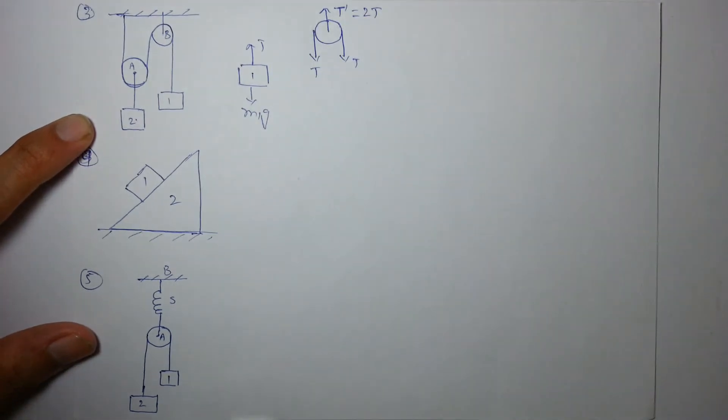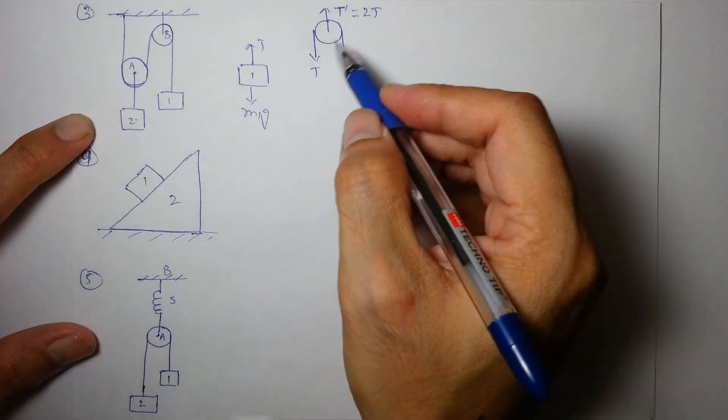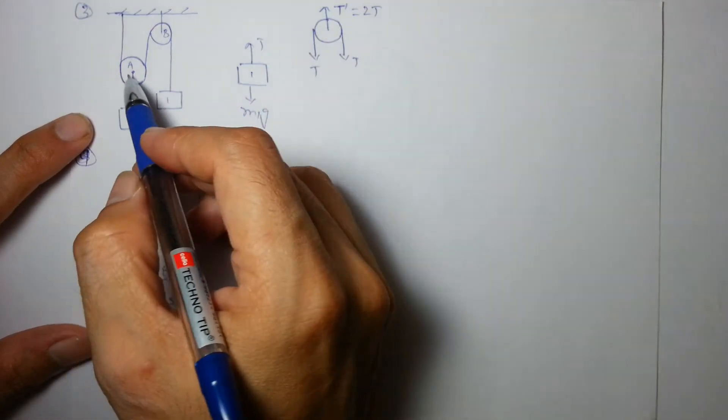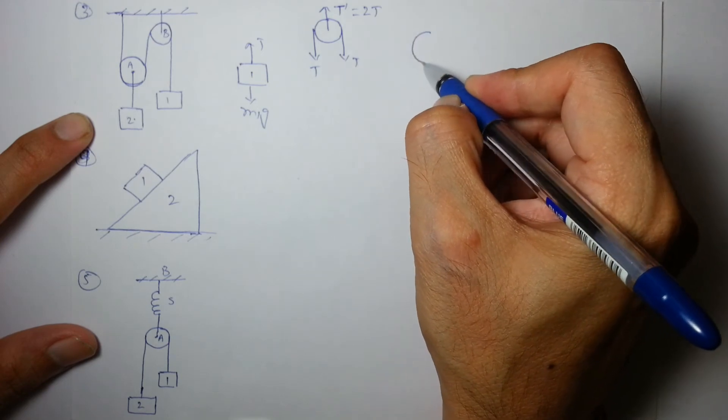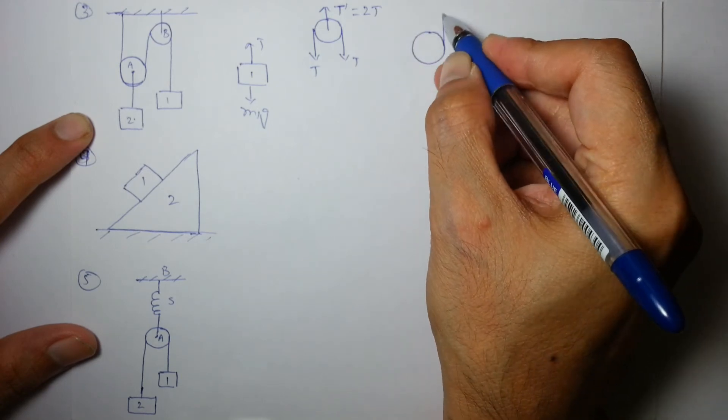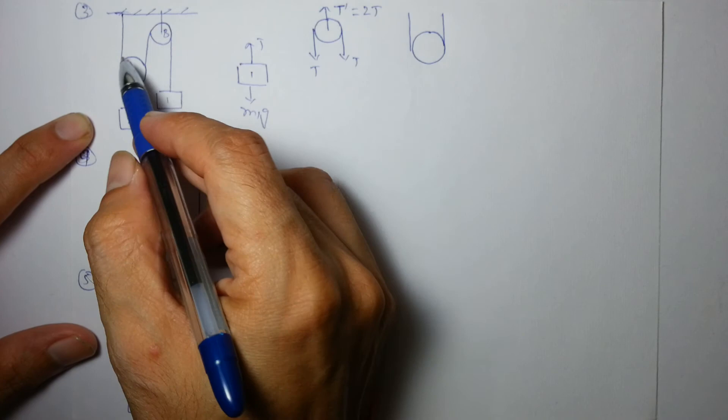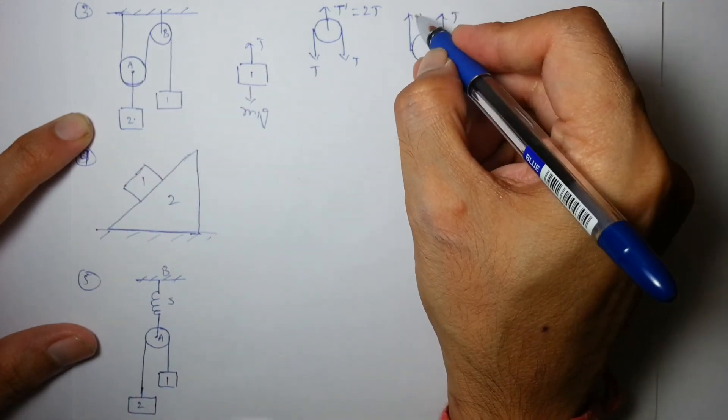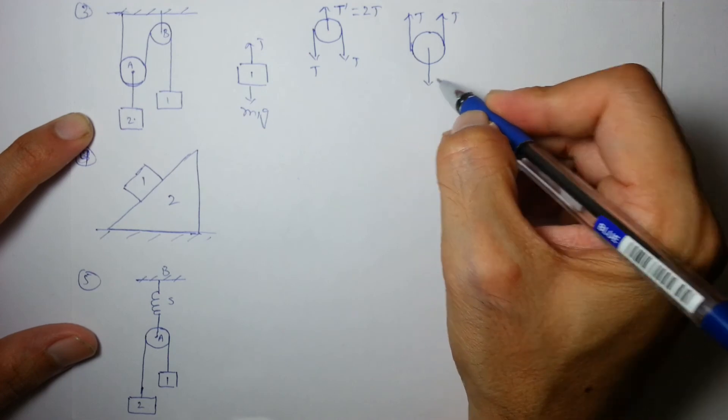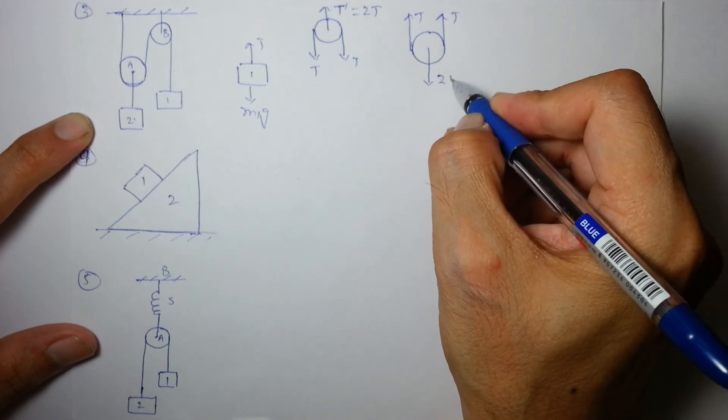Net force on the light pulleys must be zero. What about pulley a? The pulley a also experiences two upward strings which will apply same tension because they are same strings, and so the downward string will apply 2t.